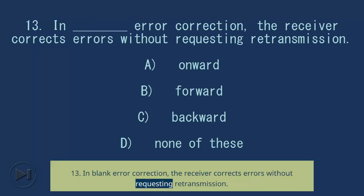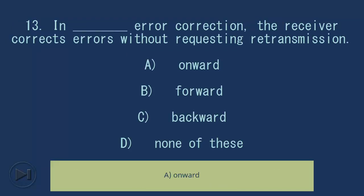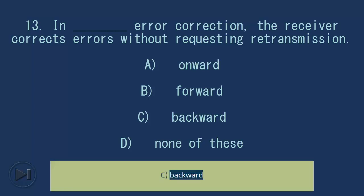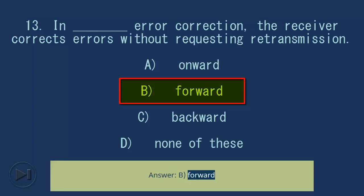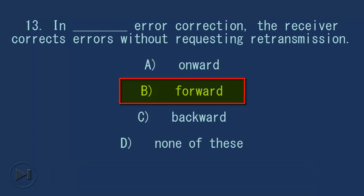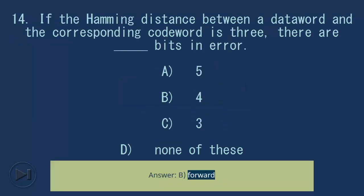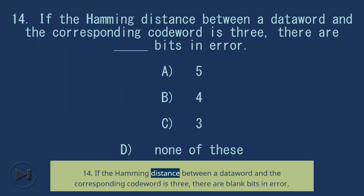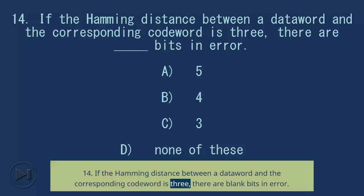Question 13: In blank error correction, the receiver corrects errors without requesting retransmission. A) retransmission, B) forward, C) backward, D) none of these. Answer: B, forward.